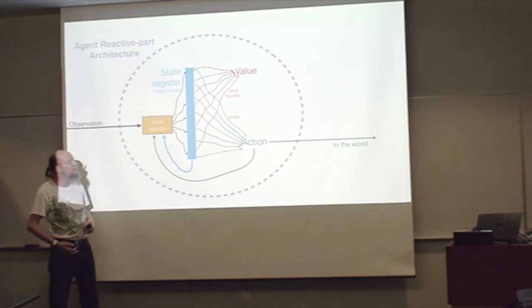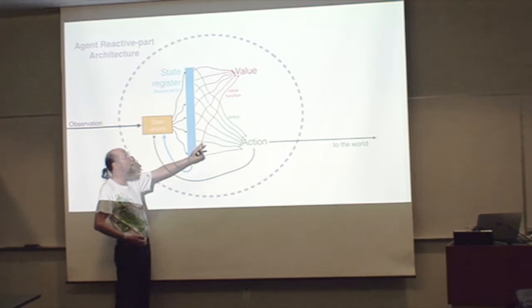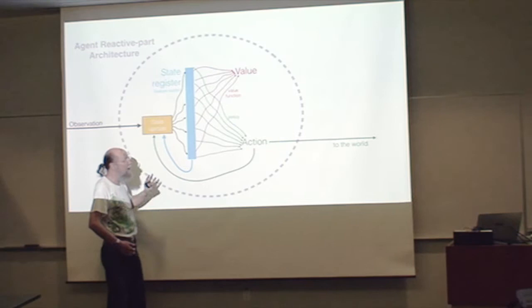There's one more piece, which is the value function. Strictly speaking, it's not necessary - our agent would be complete without it. The value function is used to learn the other parts. It's to learn, certainly, the green part, the policy, and maybe also the other parts.